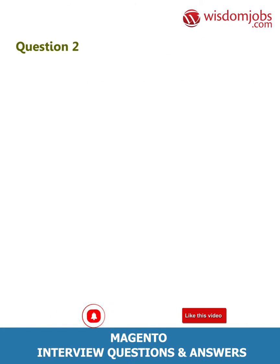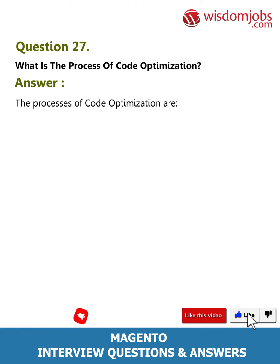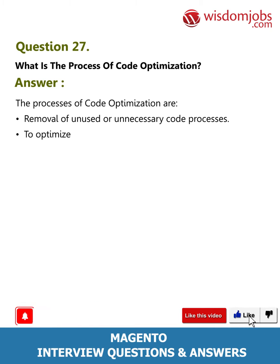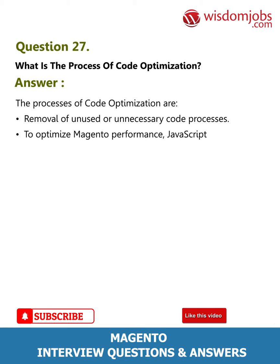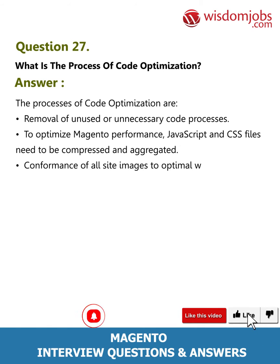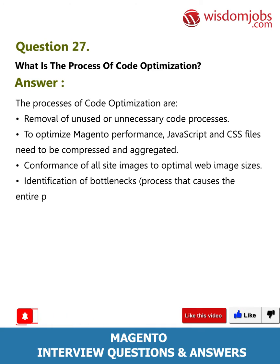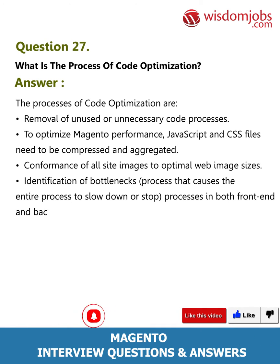Question 27: What is the process of code optimization? Answer: The processes include removal of unused or unnecessary code. JavaScript and CSS files need to be compressed and aggregated. Ensure all site images conform to optimal web image sizes. Identify bottlenecks — processes that cause the entire process to slow down or stop — in both front-end and back-end.